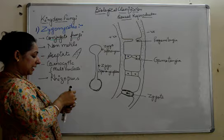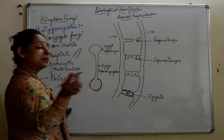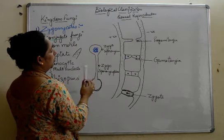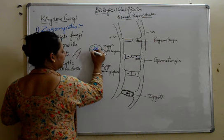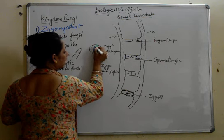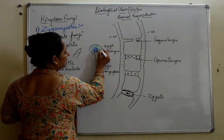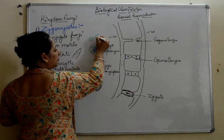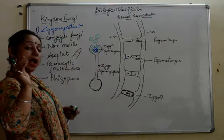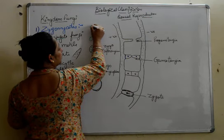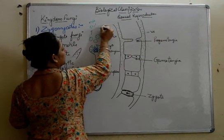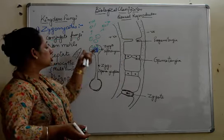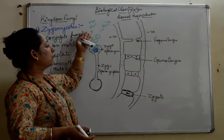Inside the zygosporangium, the same process as asexual reproduction takes place: vacuole-like structures form in the center known as columella, and around it the nuclei form a peripheral cell wall, creating spore-like structures with 2 to 3 nuclei in each. Finding a suitable condition, the sporangium ruptures to release these spores. Because it is sexual reproduction, 50% of the spores will carry a positive strain and 50% will carry a negative strain, reflecting the combining of genetic material.